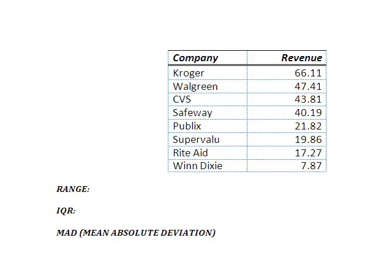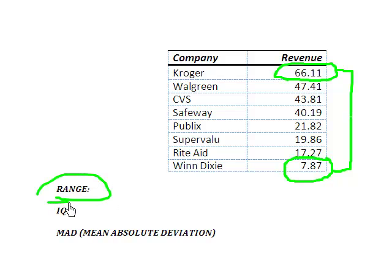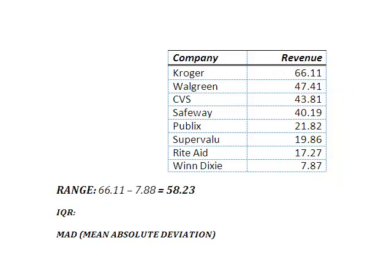We know that the range is simply the largest value minus the smallest value. So I'm going to go into my data set and since it's fairly small, I'm going to look and find my largest and my smallest value. Well, my largest value is 66.11 and my smallest value is 7.87. So the difference between the highest and the lowest point tells us the range or the dispersion of our data set. All I did was take my 66.11, my highest point, minus my lowest point of 7.88, which came out with a range of the data of 58.23.